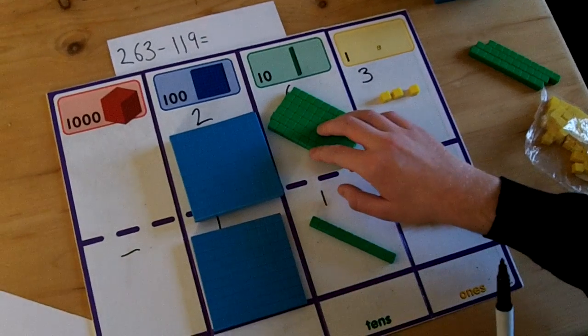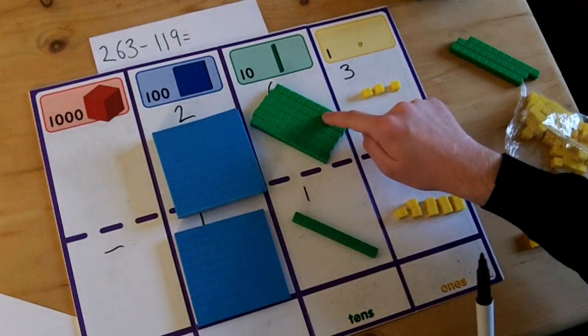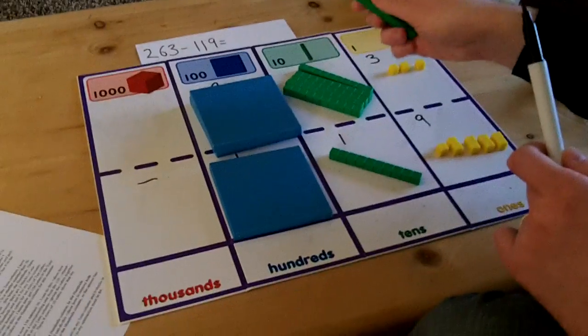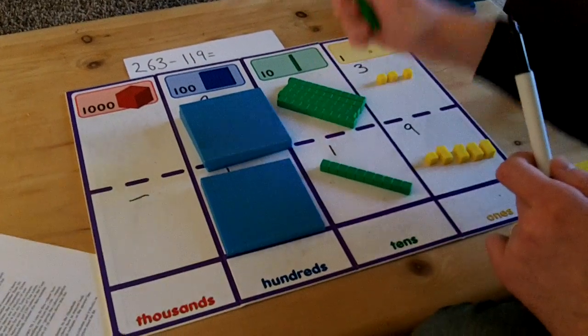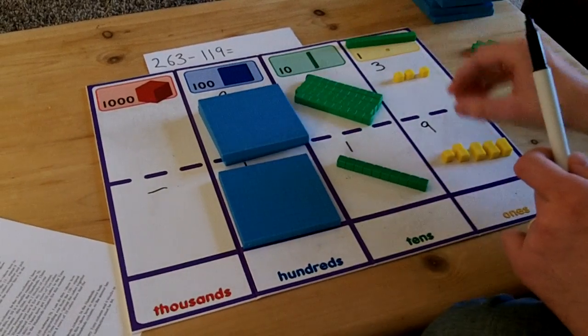There are six tens in this number, which I know because there are six rows of cubes. I must take one of these tens and use it for my ones column. This means exchanging that row of ten cubes for ten single cubes and putting them in my ones column.